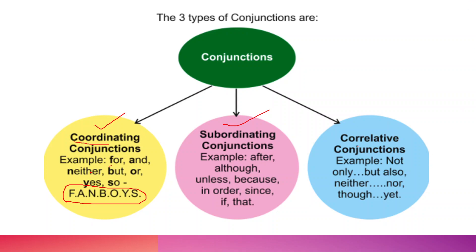In correlative conjunctions, the examples are: not only...but also, neither...nor, either...or, though...yet. They are used together in a sentence. Here you will see that both sentences are being correlated equally — 'neither this nor this,' 'either this or this.' So these are the three different types of conjunctions.